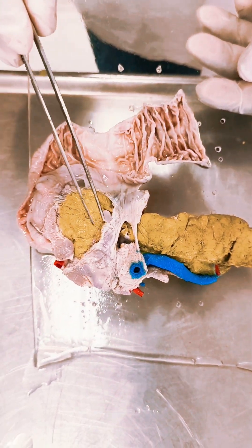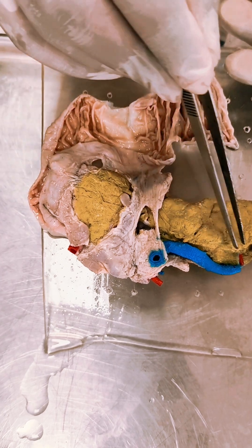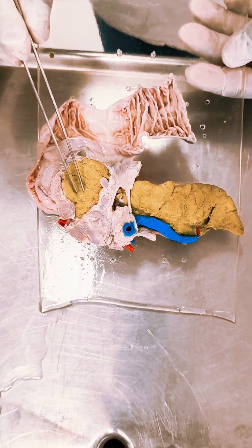This is a structure where you can see the pancreas. This yellow-painted part shows the normal structure of the pancreas.